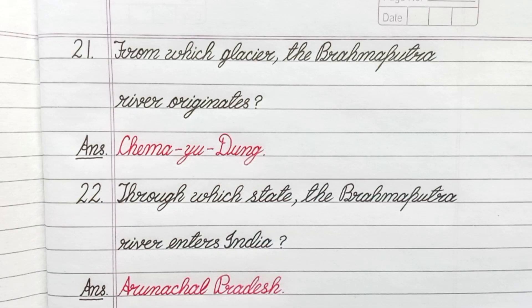Question number 22. Through which state does the Brahmaputra River enter India? Answer: Arunachal Pradesh.